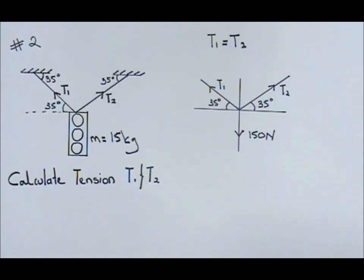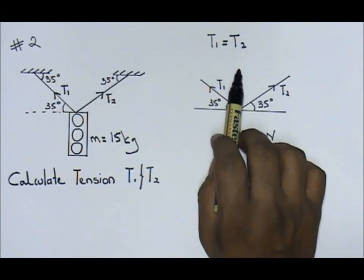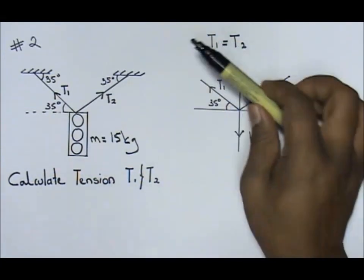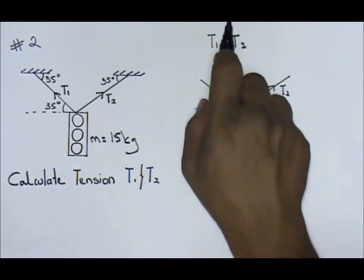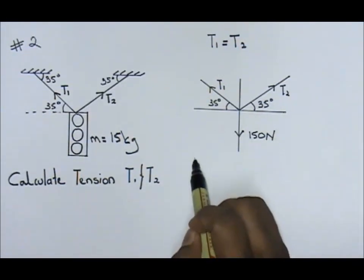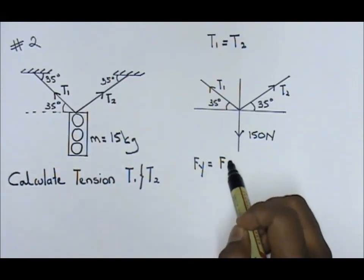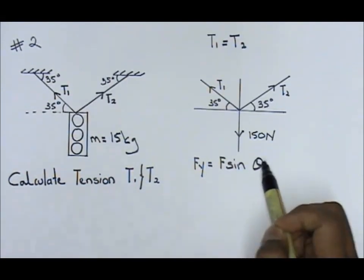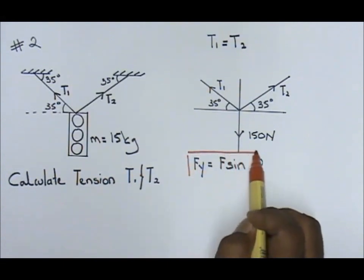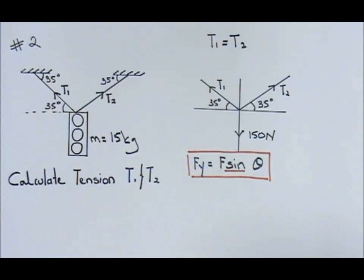First, what I'm going to do is bring my tension to my y-axis. That means I'm going to make T1 go to Fy. For me to take T1 moving to Fy, remember how I taught you. I taught you, if you are going to take Fy, you are going to use F sine theta. This is what I taught you. Fy means you use sine. Fx means you use cos.